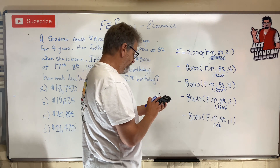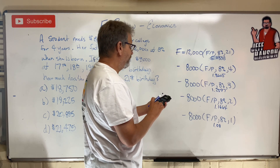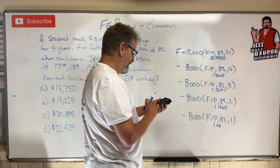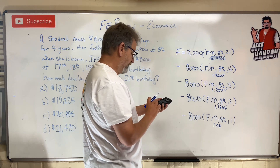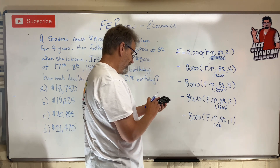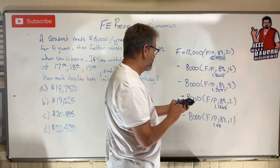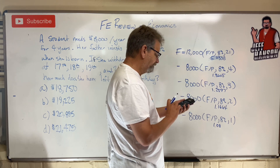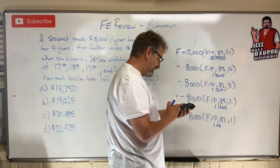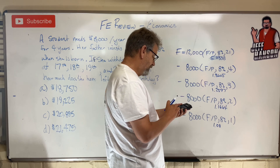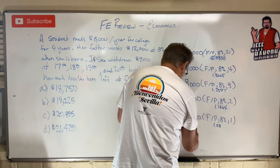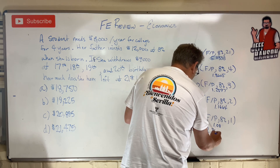So: $12,000 times 5.0338, minus $8,000 times 1.3605, minus $8,000 times 1.2597, minus $8,000 times 1.1664, minus $8,000 times 1.08 equals... drum roll please... you now have $21,472.80.